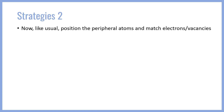Having put in our valence electrons around all of our central atoms, like usual, we want to position the peripheral atoms and match the electrons that are unpaired, matching any vacancies in the peripheral electrons. We then want to make all the necessary single bonds. So for example, let's go back to our carbonate ion species.